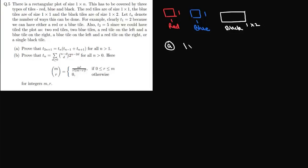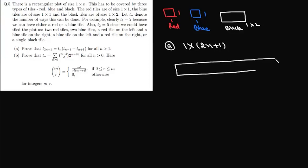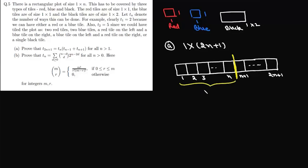For this first case we have a plot of dimension 1×(2n+1). Label positions 1, 2, 3, …, n, n+1, …, 2n+1. We bifurcate this into two parts: a dividing line splits the plot into a 1×n first part and a 1×(n+1) second part.